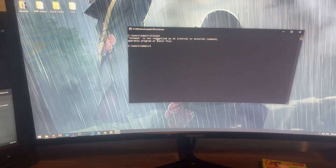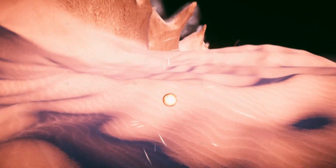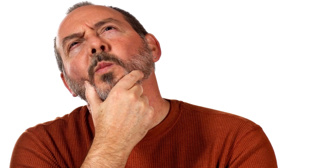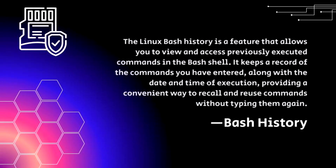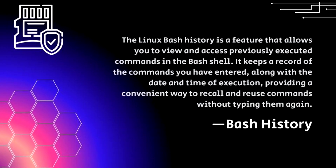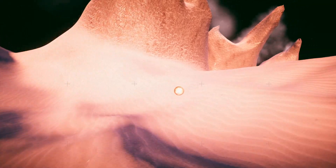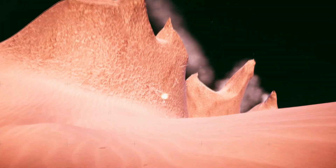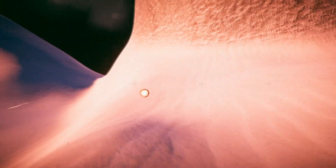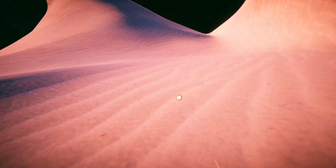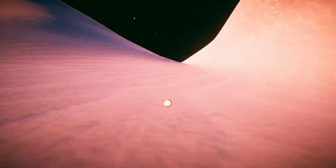Every time you enter a command into a terminal or console, you can hit the up arrow key and it remembers that command. So where does it store that command? It's actually stored in a feature called Bash History. Bash History is a feature that allows you to view and access previously executed commands in the shell. It keeps a record of the commands you entered along with the date and time of execution. So if you want to hide your activity on Linux, you have to clear this history file — if somebody gets a hold of your Bash History file, it's over.